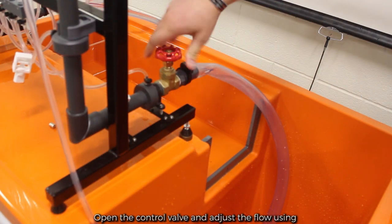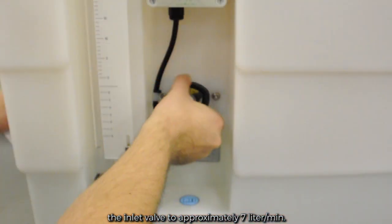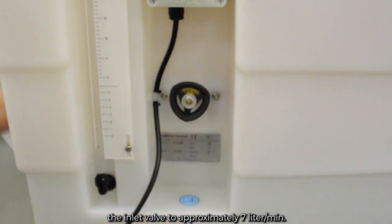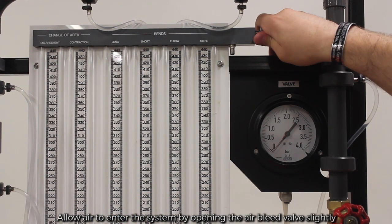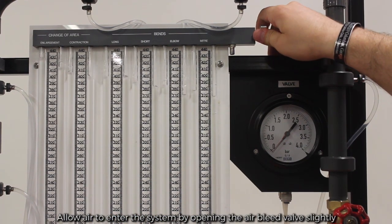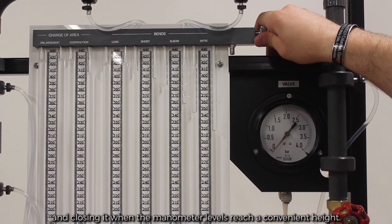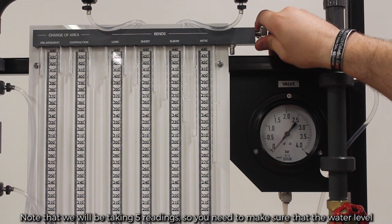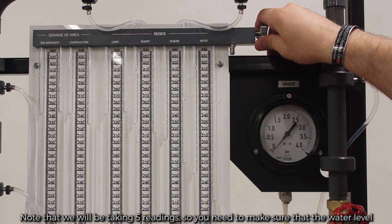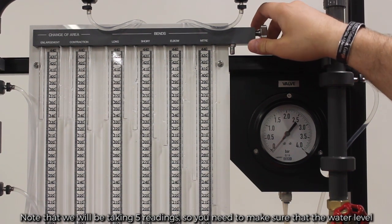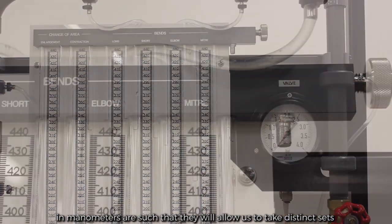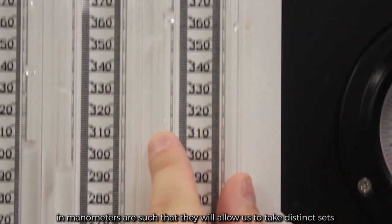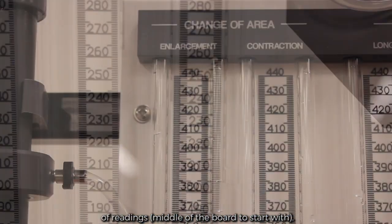Open the control valve and adjust the flow using the inlet valve to approximately 7 liters per minute. Allow air to enter the system by opening the air bleed valve slightly and closing it when the manometer levels reach a convenient height. Note that we will be taking 5 readings, so you need to make sure that the water level in manometers are such that they will allow us to take distinct sets of readings, middle of the board to start with.